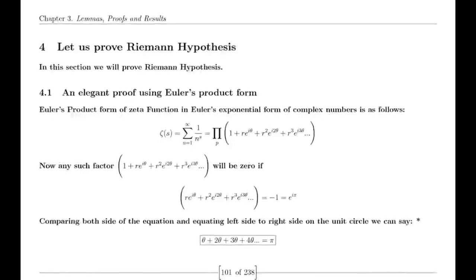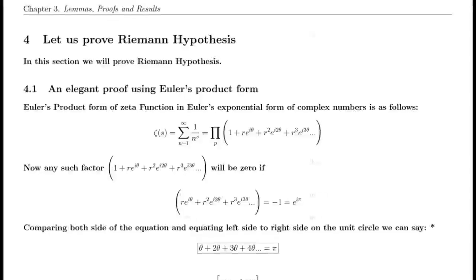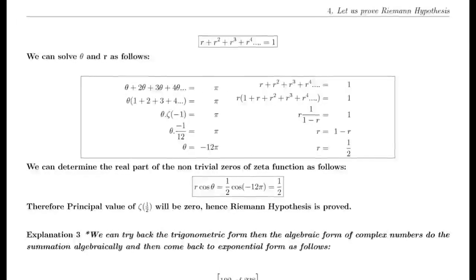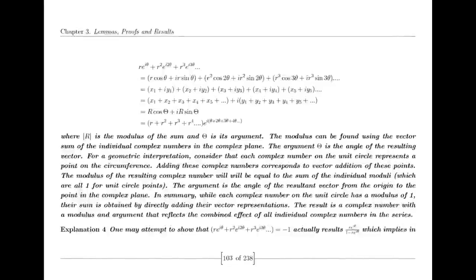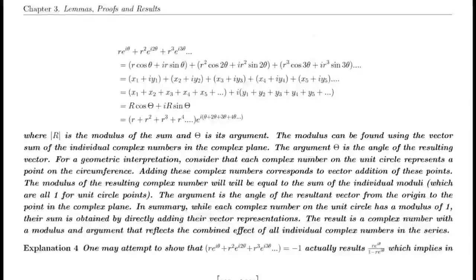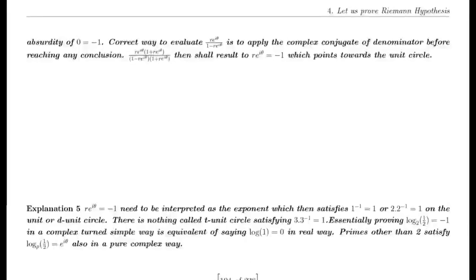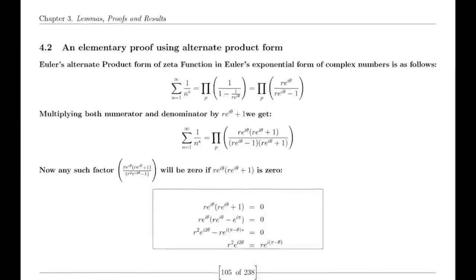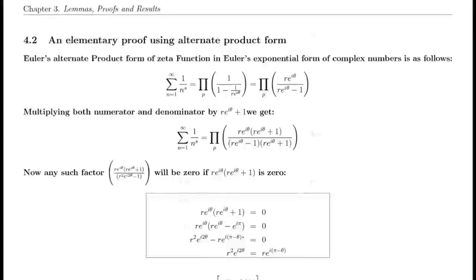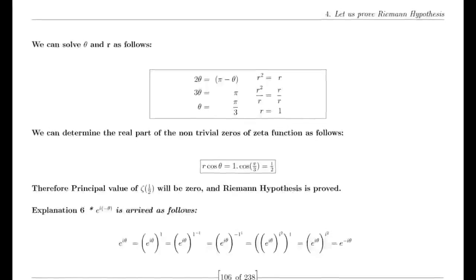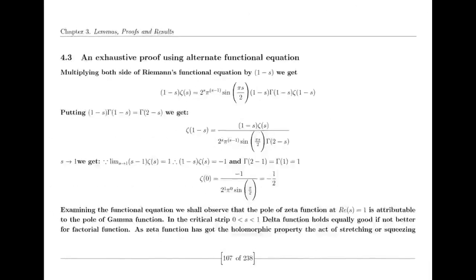You might have heard the story of the young Carl Friedrich Gauss, who when asked to sum the first 100 numbers gave the correct answer in just seconds. Today this calculation can be done quickly by anyone, but at the time it was thought to be an act of genius. Gauss went on to come up with the prime number theorem (PNT), which describes the asymptotic distribution of prime numbers — a major milestone in number theory. His work laid the groundwork for many important mathematical discoveries, including the Riemann hypothesis.